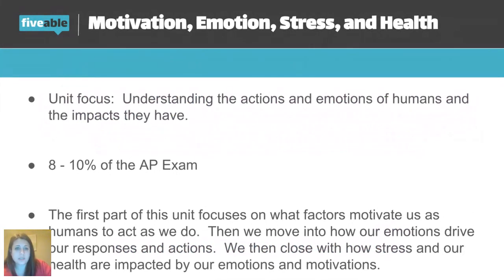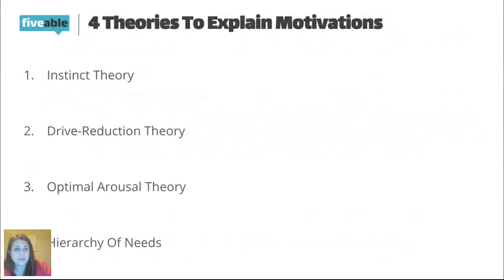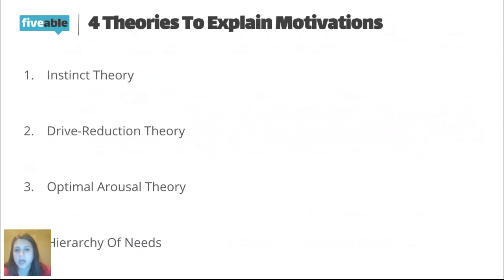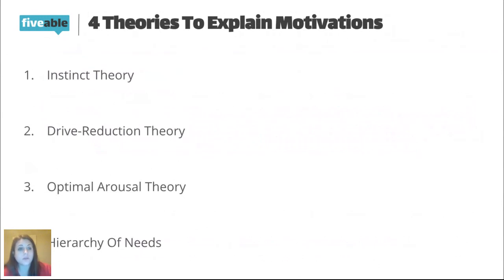The four main theories of motivation we're going to talk about today are instinct theory, drive reduction theory, optimal arousal theory, and hierarchy of needs. Each of these has some pros and cons, so none of them by themselves offers a complete explanation of why we do what we do as humans. We need to know them all to get a better, more well-rounded picture of our actions.